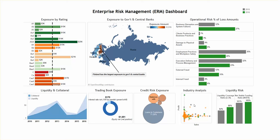Industry Analysis is a scatterplot that shows the profit and sales performance by industry. The colors here represent different industry types. I understand I don't have a lot of the detail zoomed in or shown here, but this is meant to be a sample of what type of reports you can use for risk management purposes.